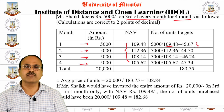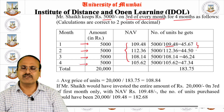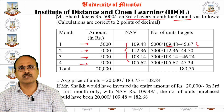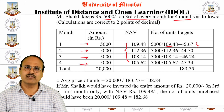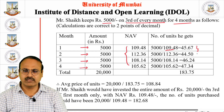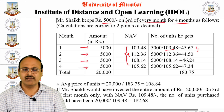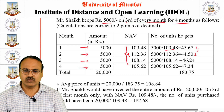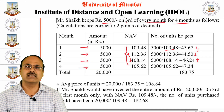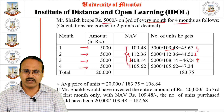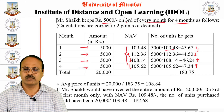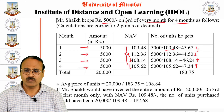In the first month the NAV was ₹109.48, so the number of units purchased was 45.67. This highlights a difference between shares and mutual funds — in mutual funds during SIPs we can purchase a fractional number of units. In the second month the NAV increased to ₹112, so the number of units purchased went down to 44.50. In the third month the NAV fell to ₹108.14 and units purchased increased, and in the fourth month the NAV fell further, so units purchased rose again to 47.34.